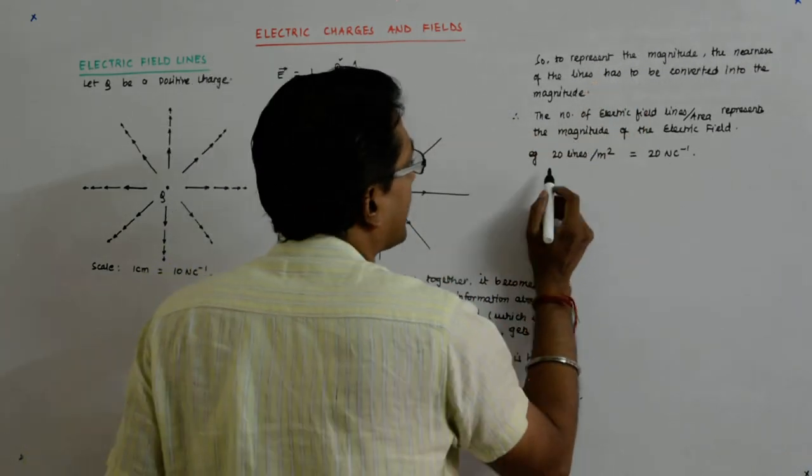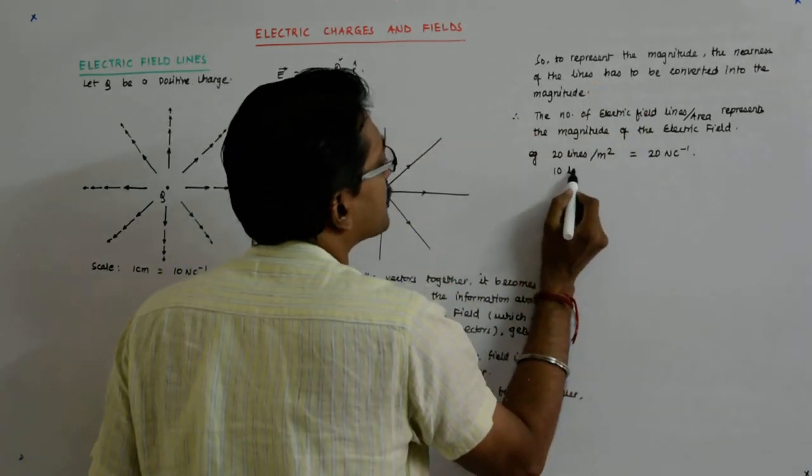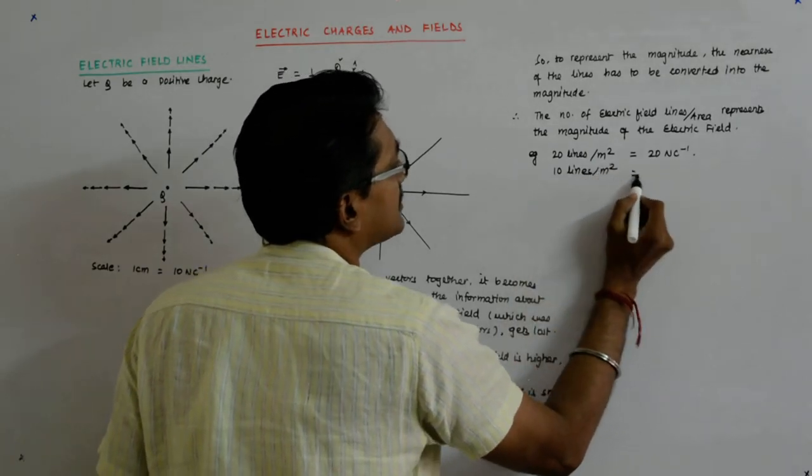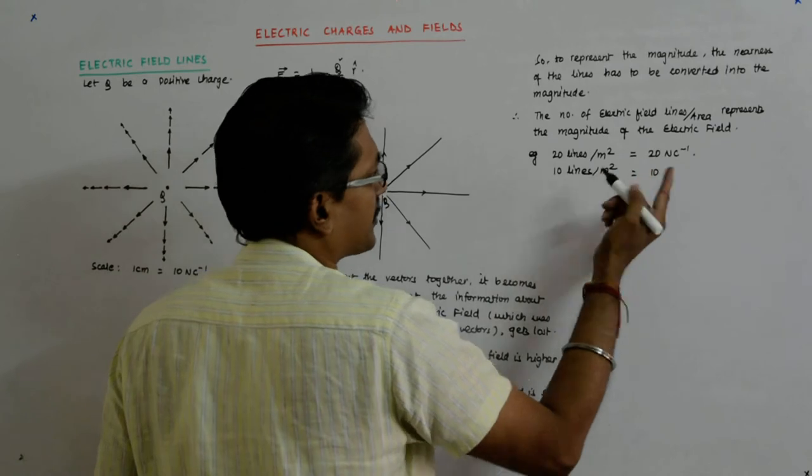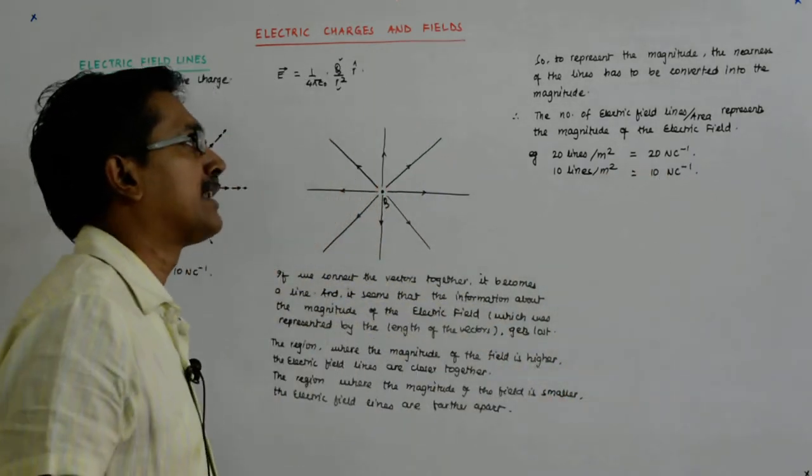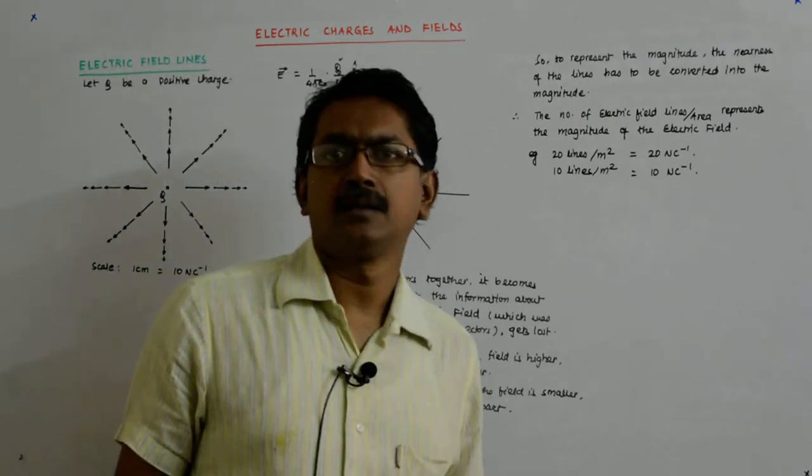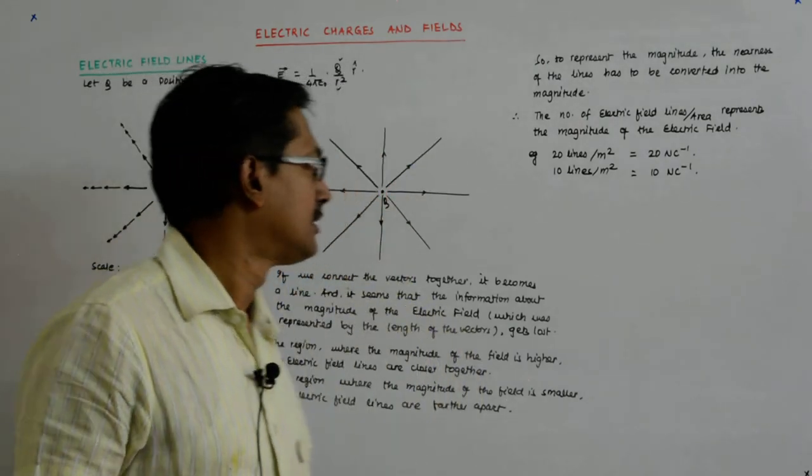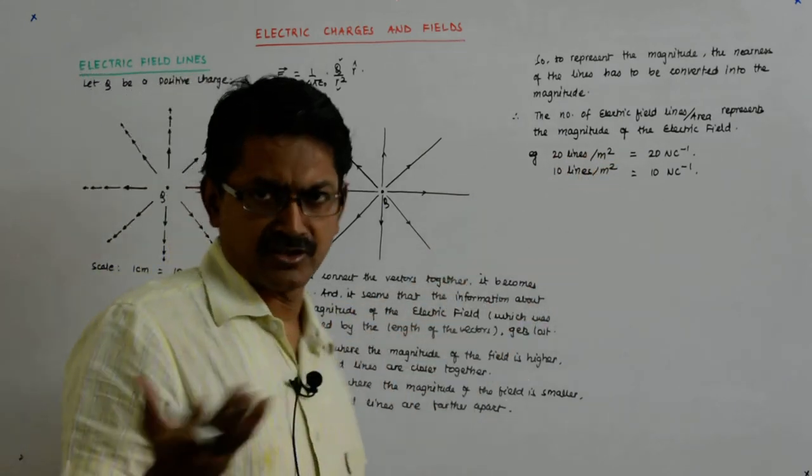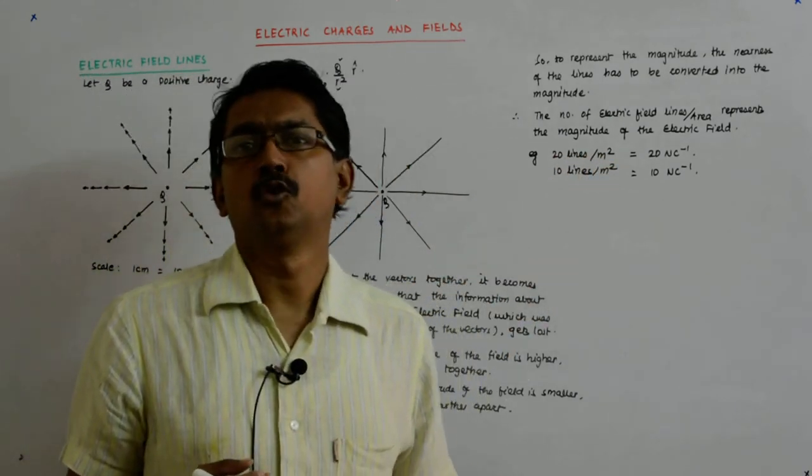If I move farther apart and I find that per meter square I have got only 10 lines, what happens? I immediately presume that it is 10 Newton per coulomb and I will be correct. I will be correct in finding out the magnitude and it can be measured that the magnitude will be only that.